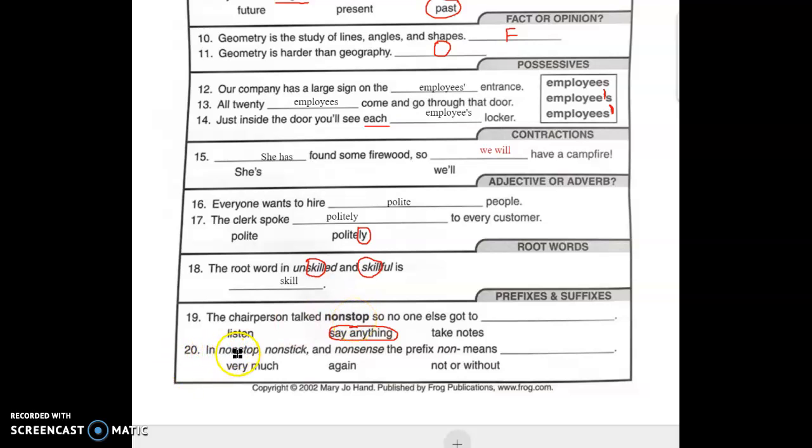In nonstop, nonstick, and nonsense, the prefix non means not or without. Nonstick pan is a pan that food will not stick to. To speak nonstop means that you do not stop. And nonsense means you have no sense.